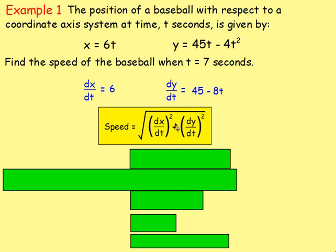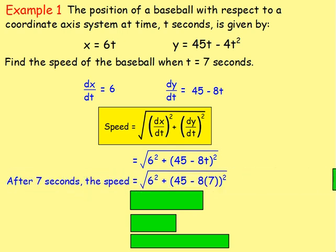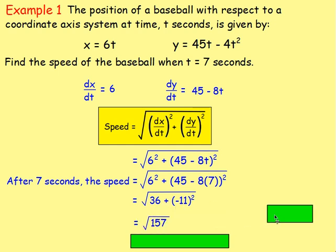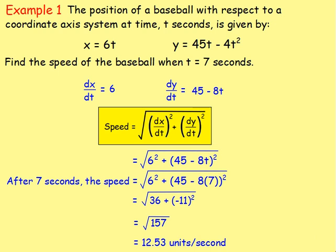The speed equals the square root of (dx/dt)² + (dy/dt)², which is the square root of 6² + (45 − 8t)². Substituting t = 7: speed = √(36 + (45 − 56)²) = √(36 + 121) = √157 ≈ 12.53 units per second. In Advanced Higher, it's best to leave answers as exact values, so √157.